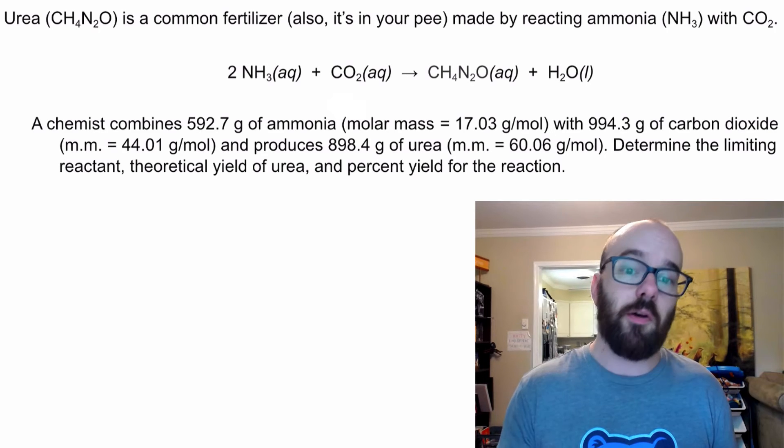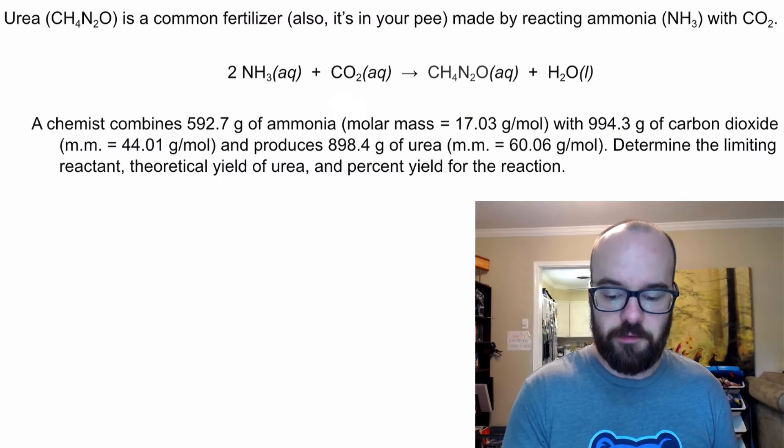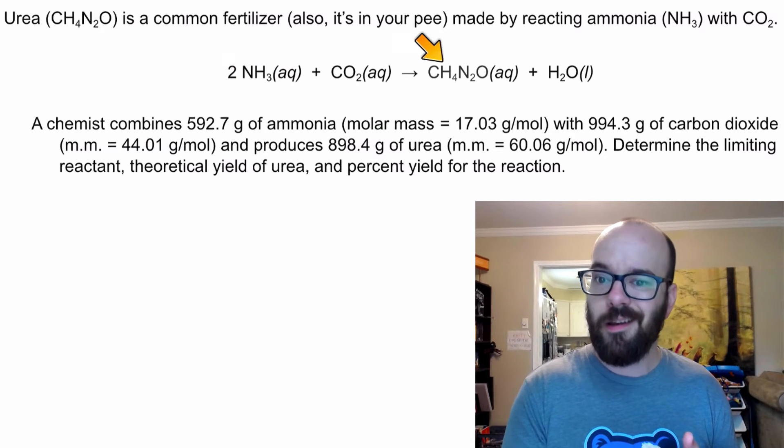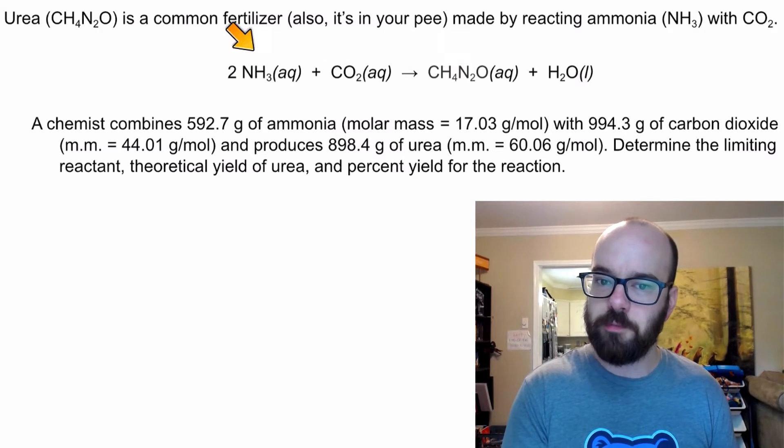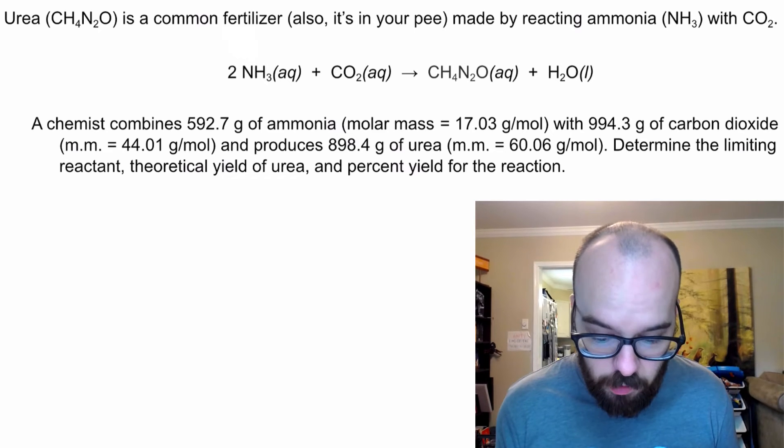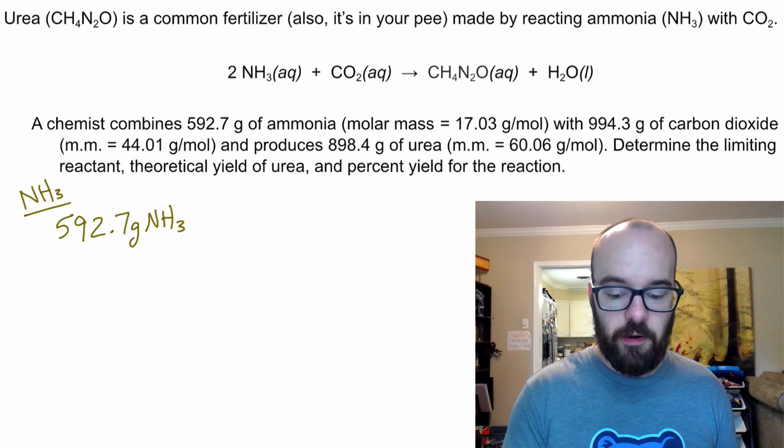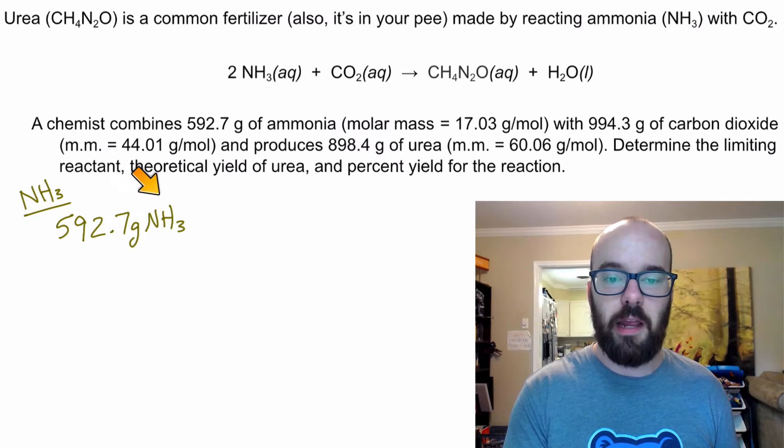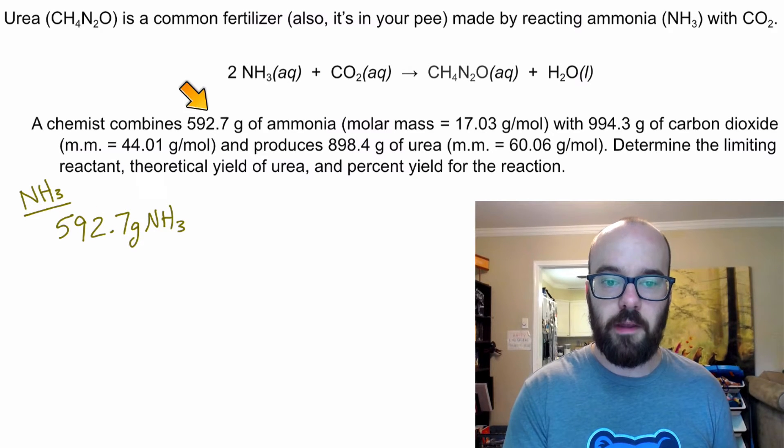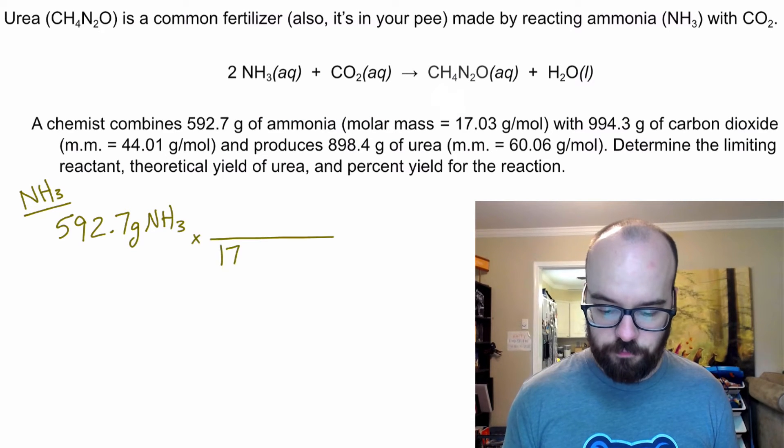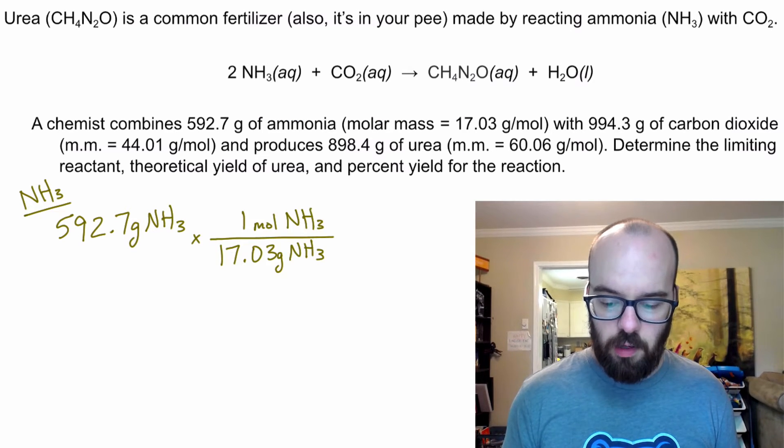I'm going to choose ammonia first. It doesn't matter the order. I'm going to figure out, if ammonia were the limiting reactant, how much urea would be produced? So let's start out with ammonia. We've got 592.7 grams of ammonia. I'm going to use the molar mass to convert to moles of ammonia.